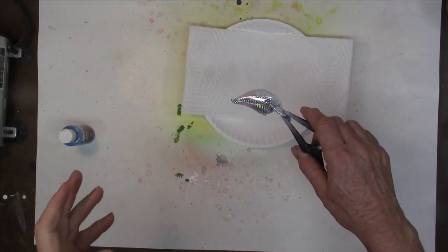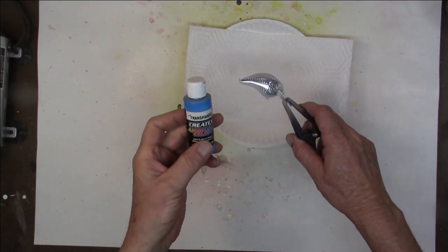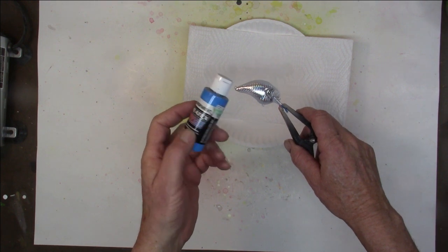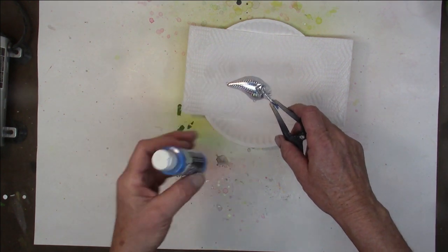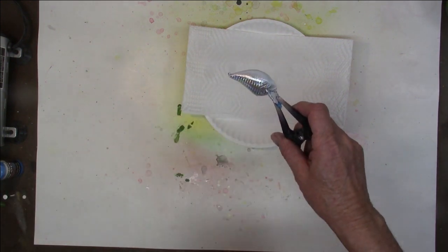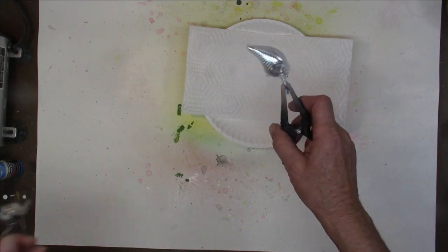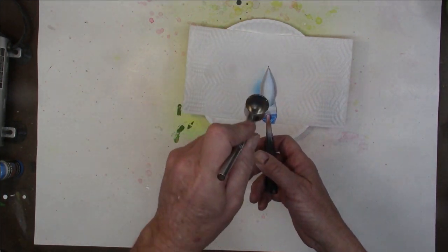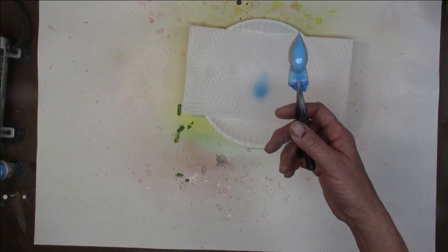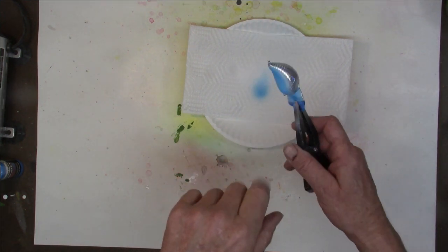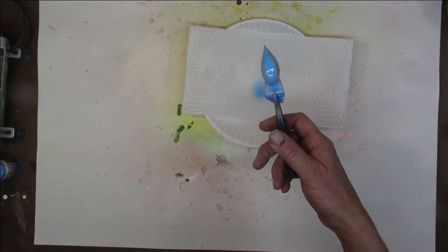All right, we're going to use actually two colors of blue for our blue holographic. The first one we're going to use Createx transparent Caribbean blue. Now we're going to use this on the belly. We're going to do a little something on the side. We'll put a little something different on top, but for now let's just run some right down the belly. That's it. Just cover that. That's all we're going to do. I want to put a little something on the side, but the first thing I'm going to need to do is dry this a little bit. So hang on.